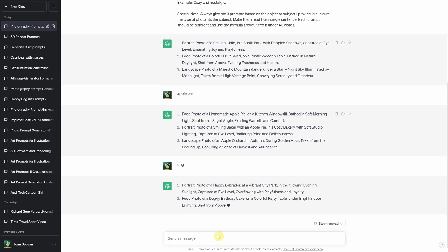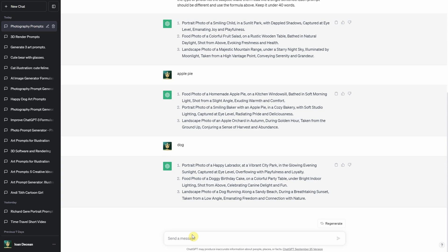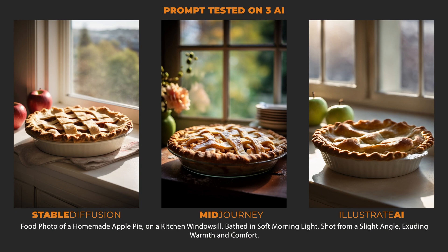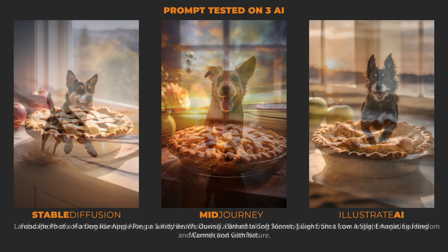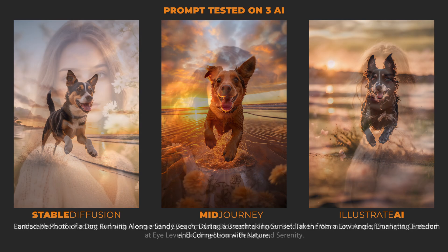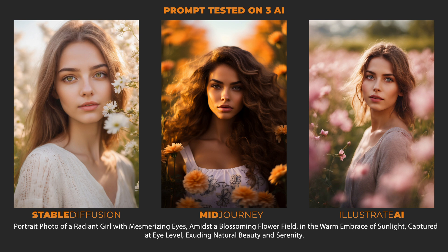If you don't get too specific with your subjects, the AI can get pretty creative on its own. I tested the formula using an apple pie prompt and got some really nice and delicious looking results. For the second test, I used a prompt about a dog running on a sandy beach at sunset. The third test was a portrait of a radiant girl in a flower field. All of these gave me some pretty good images.